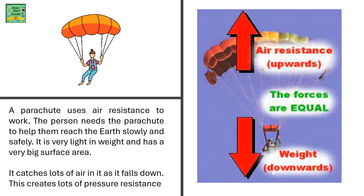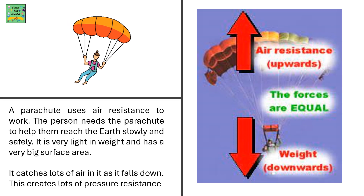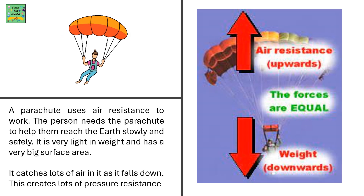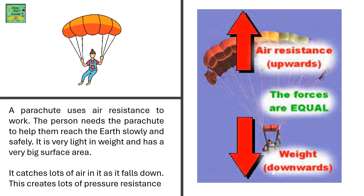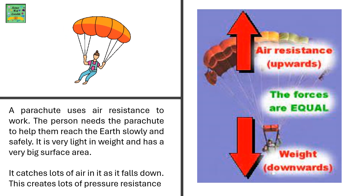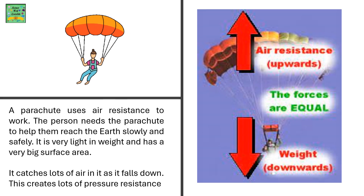A parachute uses air resistance to work. The person needs a parachute to help them reach earth slowly and safely. It's very light in weight and has a very big surface area. It catches lots of air as it falls down. This creates lots of air resistance. In the diagram, the directions of the forces are marked. Air resistance goes upwards and the weight of the person is downwards, and these two forces become equal.